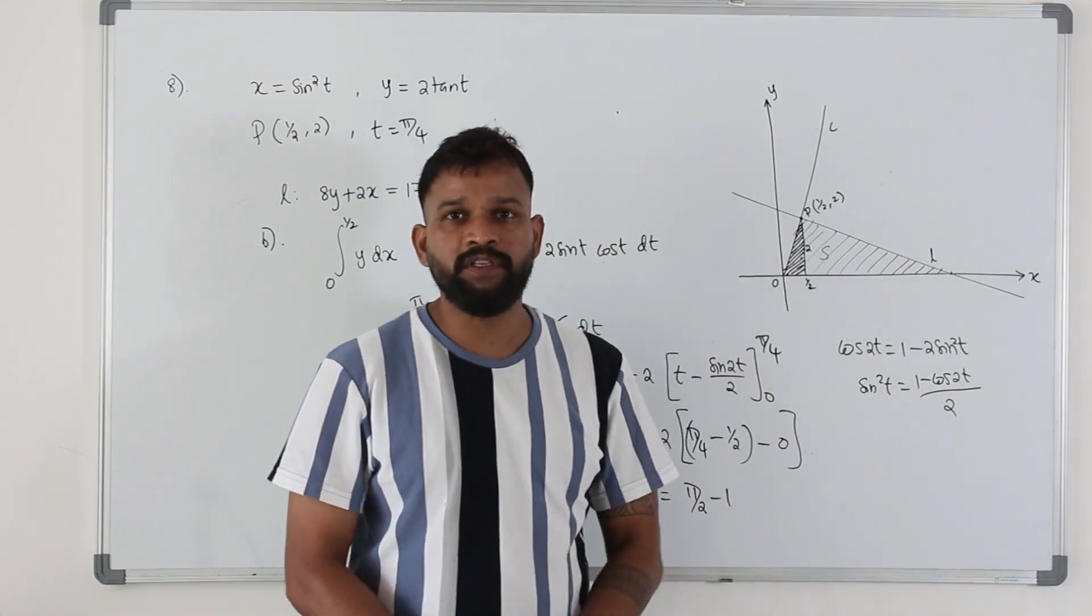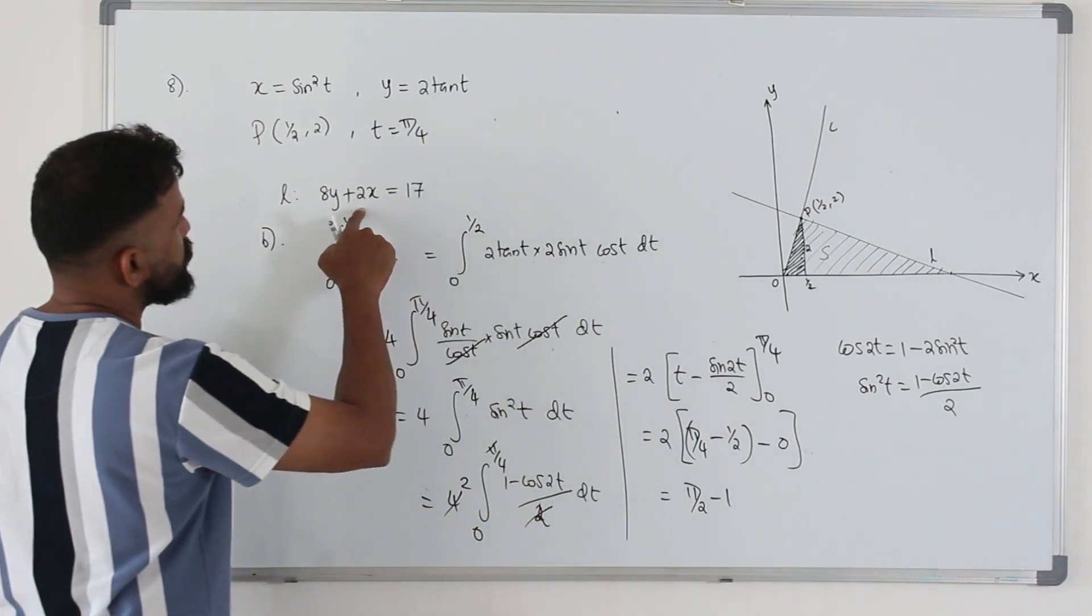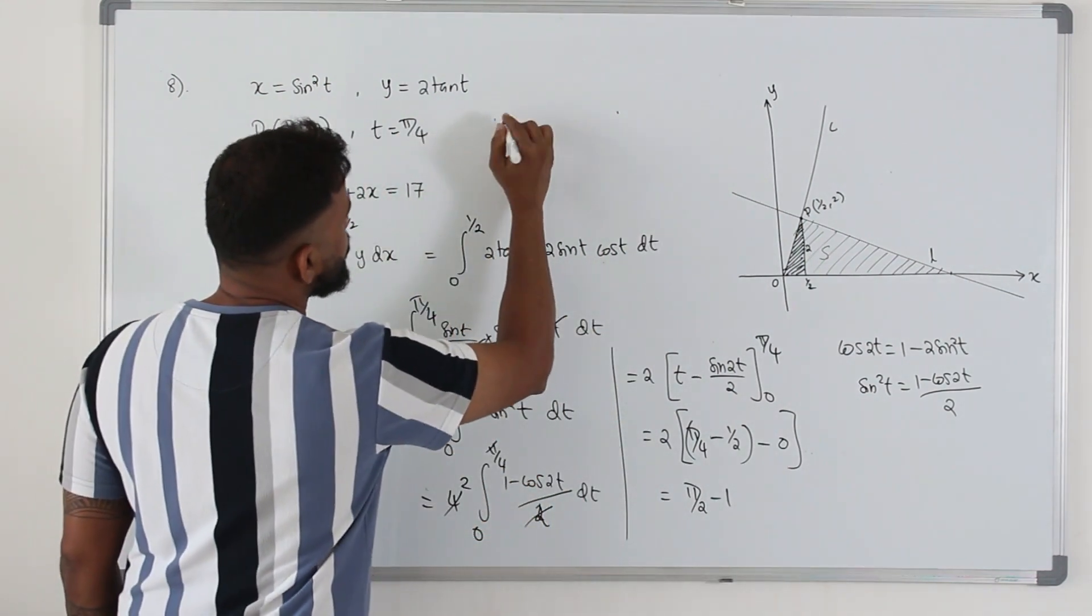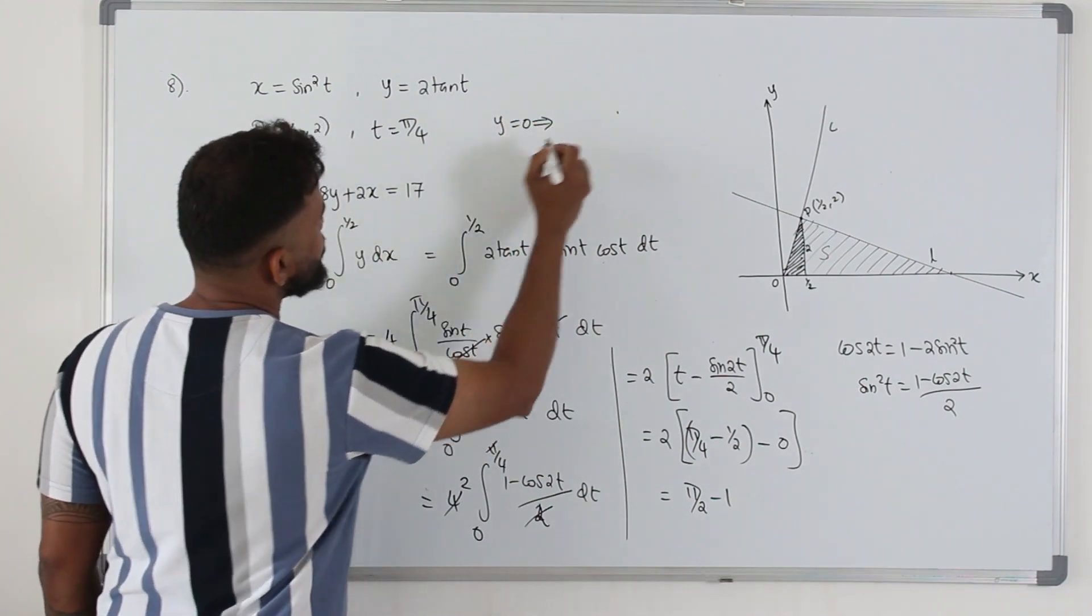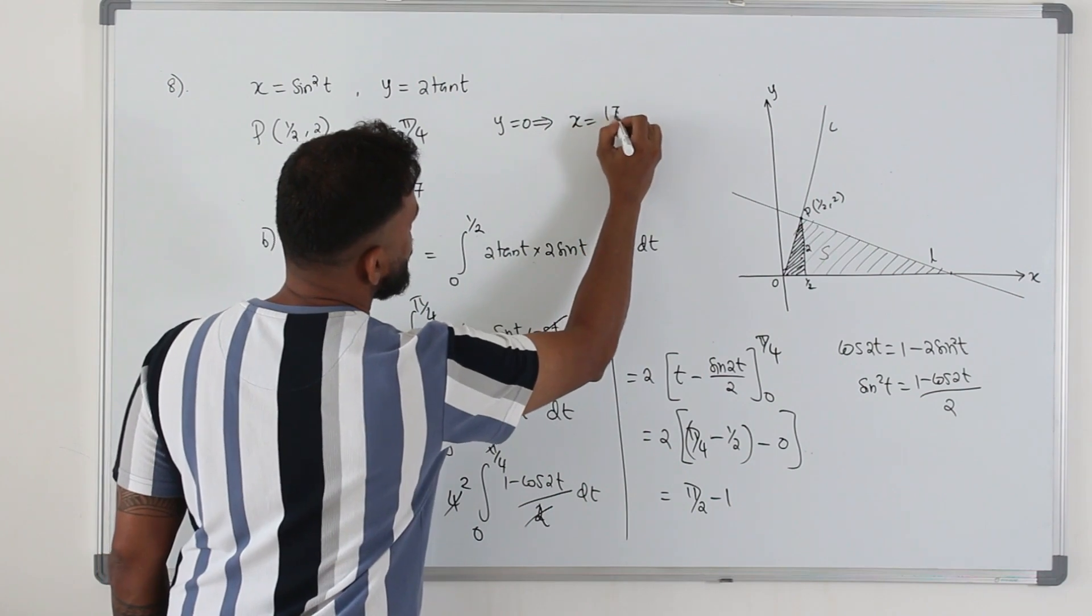Which is basically the x intercept of this line. Take the equation of the line which is given here from part a. To find the x intercept, replace y by 0 here. So 2x is 17, x is 17 over 2.